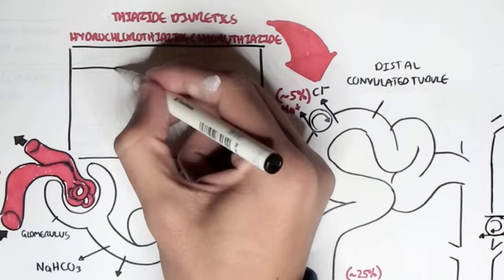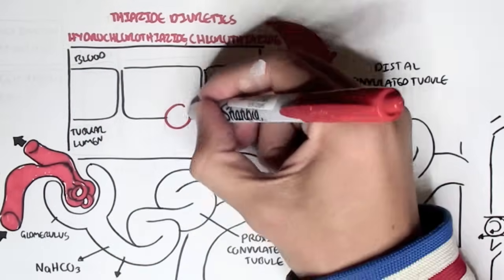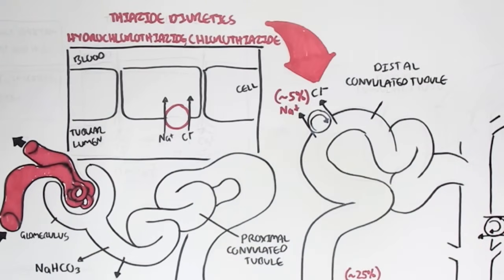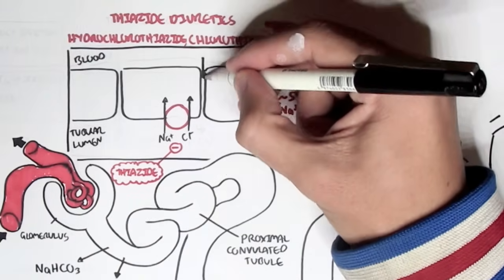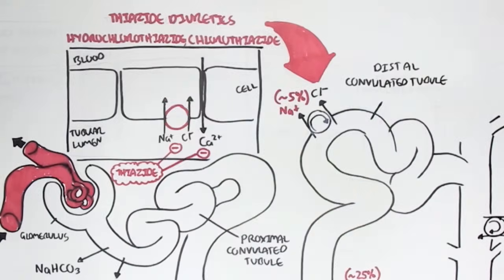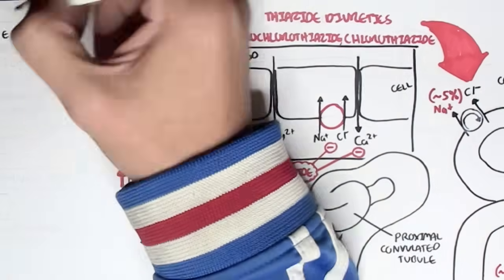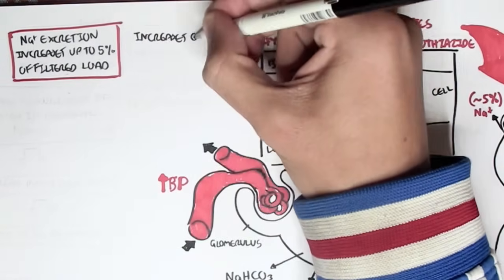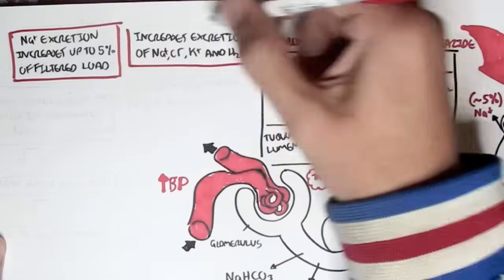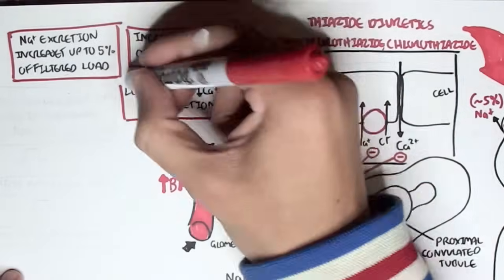Here we have the cell, the blood on the outside, and the tubular lumen on the inside. Thiazide essentially prevents sodium reabsorption by inhibiting the sodium-chloride cotransporter. In the long term, it will inhibit the secretion of calcium from the blood to the lumen, but will promote the secretion of magnesium. Thiazide diuretics increase sodium excretion up to 5% of the filtered load — 5% because this transporter only reabsorbs roughly 5%. They increase excretion of sodium, chloride, potassium, and water, while decreasing calcium excretion and increasing magnesium excretion in the long term.